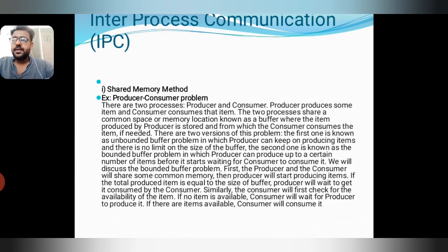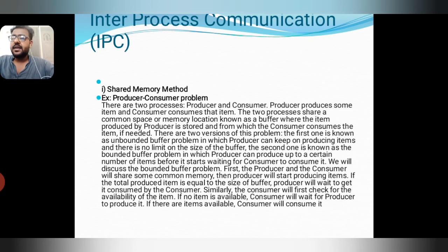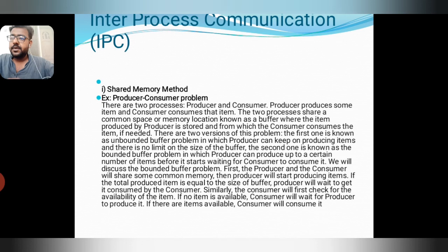Inter-process communication shared memory method — producer-consumer problem. There are two processes: producer and consumer. The producer produces items and the consumer consumes data items. The two processes share a common space or memory location called a buffer, where items produced by the producer are stored and consumed by the consumer. There are two versions of this problem: the unbounded buffer problem, in which the producer can produce any number of items before waiting for the consumer.